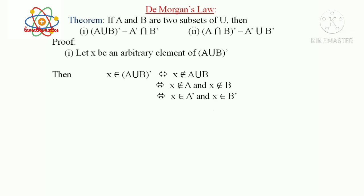That is, X is an element of A' and X is an element of B', so X is an element of A' intersection B'. Now we can see that (A union B)' is a subset of A' intersection B'. This completes the proof.